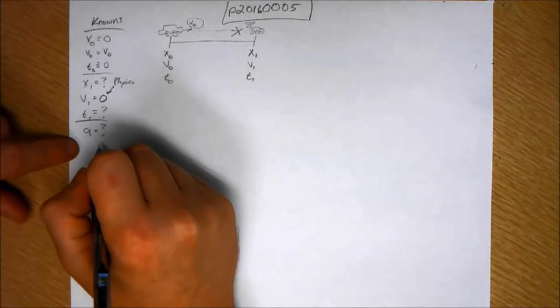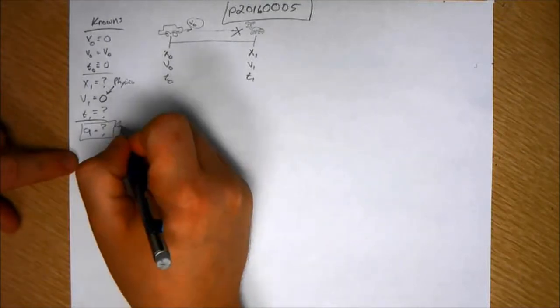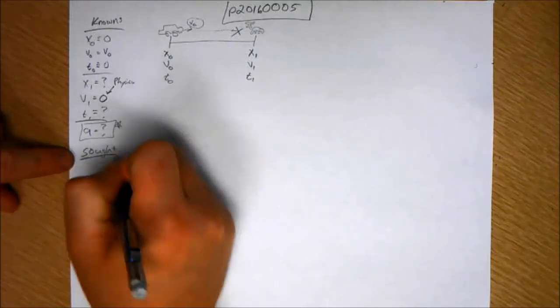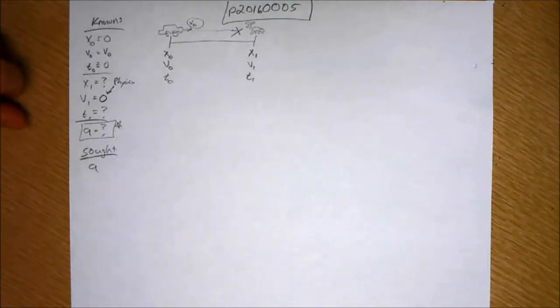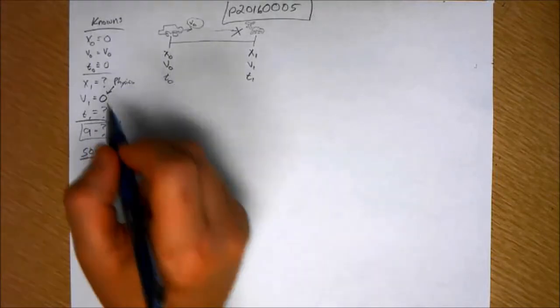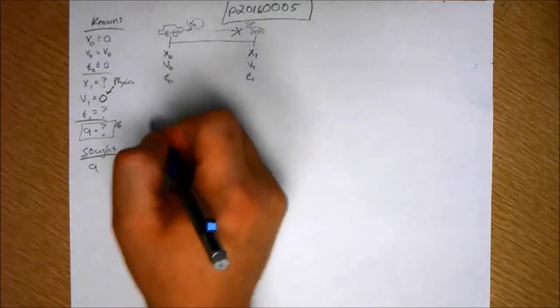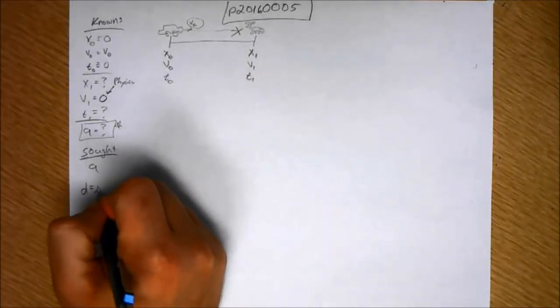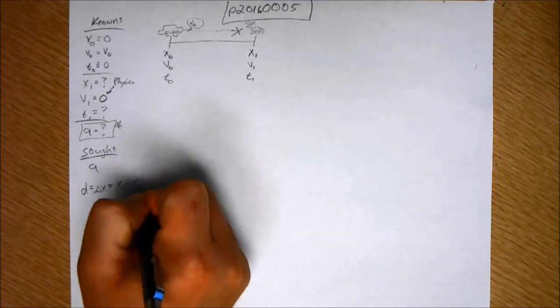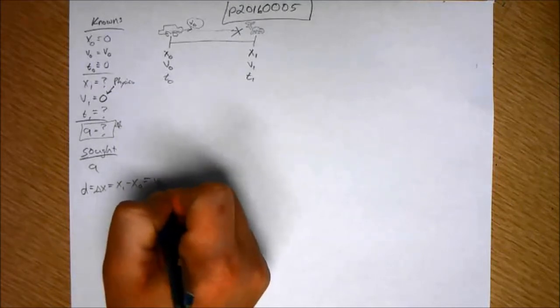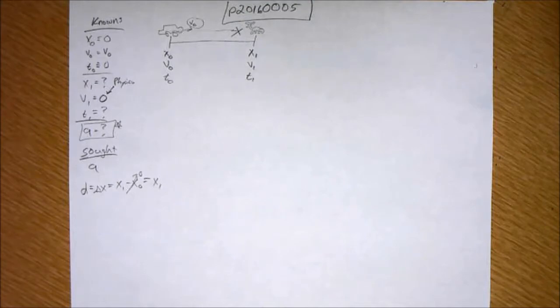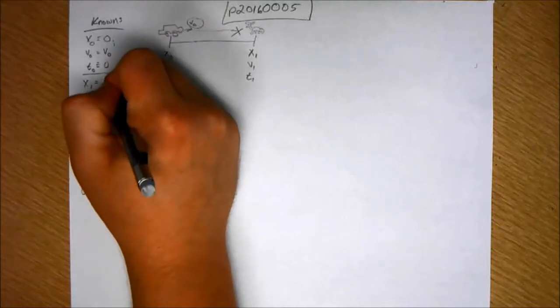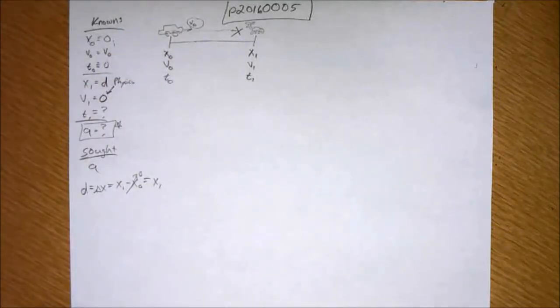We want to find acceleration. That's what we're looking for. Sometimes I like to write another column and say we're seeking A. What else are we given? Well, we're given D. The distance is between this point and that point. So D is just equal to delta X, which is equal to X-one minus X-naught, which is equal to X-one, because X-naught is zero. So we are actually given X-one. I will go back and call that D. Okay, makes sense?